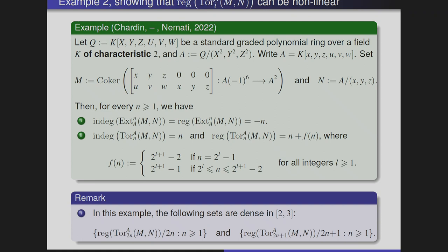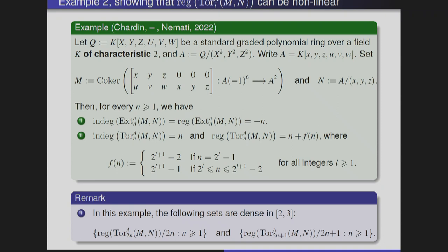We need characteristic 2 for this example, because we have verified in Macaulay2 that when the characteristic is 0, we get linear behavior. Surprisingly, one may ask whether we always have linear behavior when the characteristic of the base field is 0. We have verified other examples as well, and there also we have seen linearity. So only when the characteristic is positive — specifically characteristic 2 — do we get this nonlinear behavior.